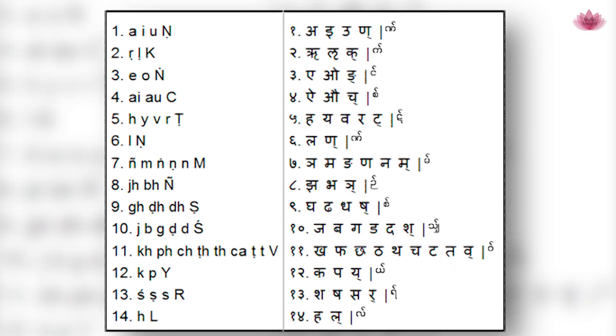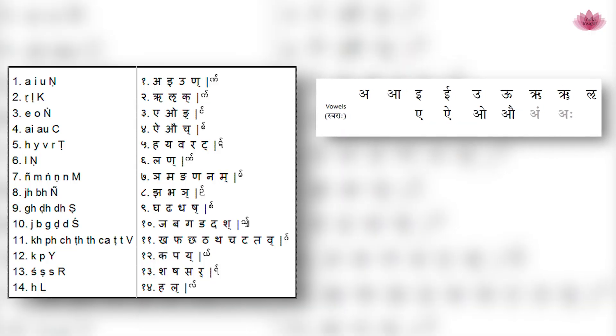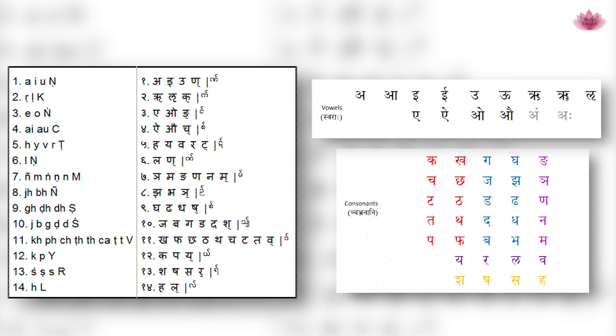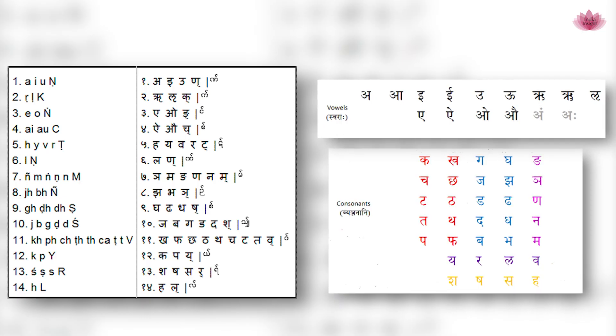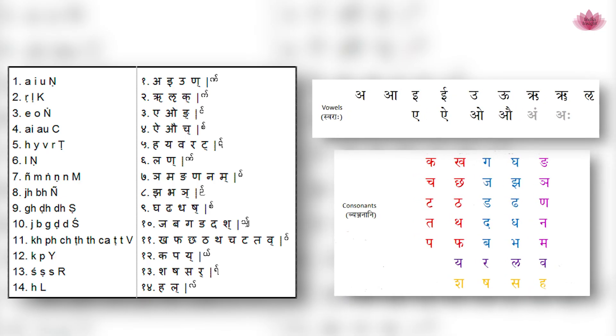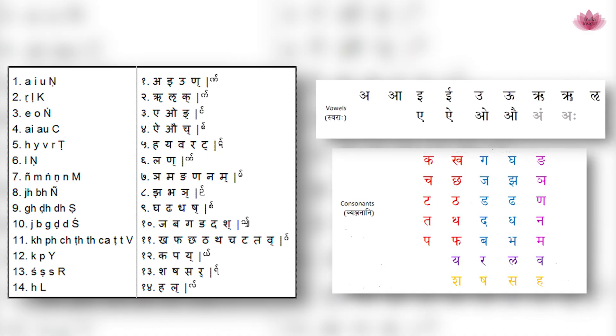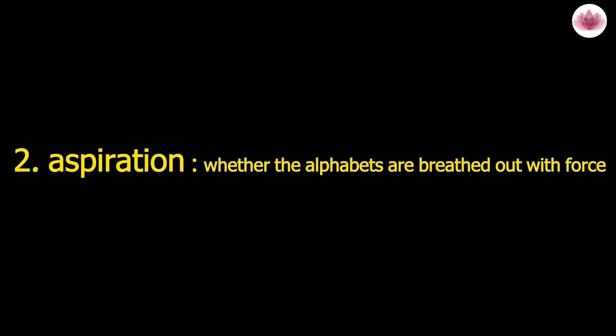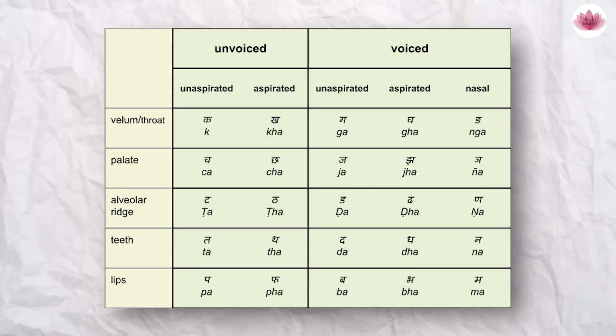This is the Maheshwara Sutra as heard by Panini. Sutras 1 to 4 form the Swaras or vowels, and Sutras 5 to 14 are formulated as Vyanjanas or consonants. Based on the Maheshwara Sutra, the Varnamala — which contains both Swaras and Vyanjanas — was formulated. The Varnamala is arranged in a tabular form based on two main features of sound: first, place of articulation — where the alphabets are produced in the mouth — and second, aspiration — whether the alphabets are breathed out with force.